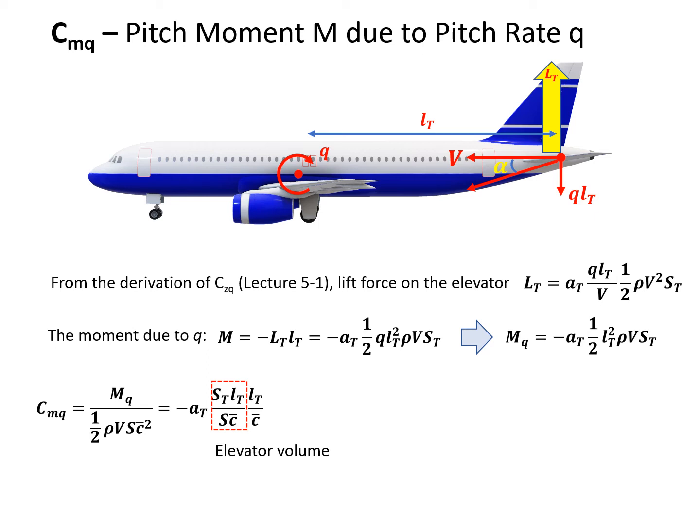We recombine it and the highlight portion can be defined as the elevator volume. So CMq can be written in a more concise form: minus AT times VT (the elevator volume) times LT over C, which is the ratio between the elevator moment arm divided by the mean aerodynamic chord.